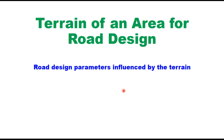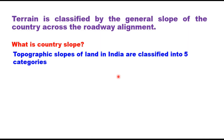Hello friends, today in this session we will discuss terrain of an area, which is important for design of roads and also what are the design parameters which are influenced by the terrain as given in different IRC codes. Terrain of an area is classified by the general slope of the country across the roadway alignment, and I will explain this term 'across the roadway alignment' later. But let us first understand what is the country slope.